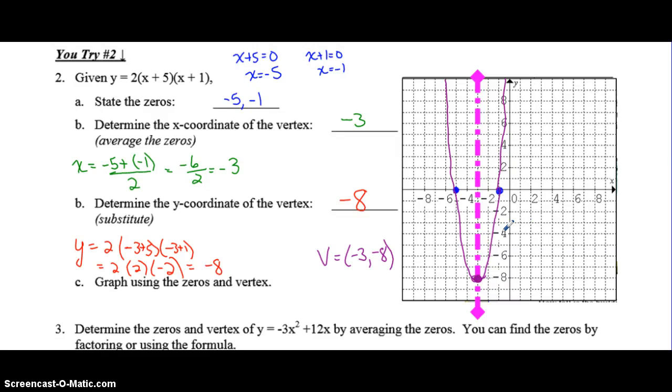Okay, now you can check your answer to number 2. The zeros were at negative 5, negative 1. When you average them together, you get negative 3 for the x-coordinate of the vertex. When you substitute it into the equation, you get negative 8 for the y-coordinate of the vertex. That means your vertex is at negative 3, negative 8.